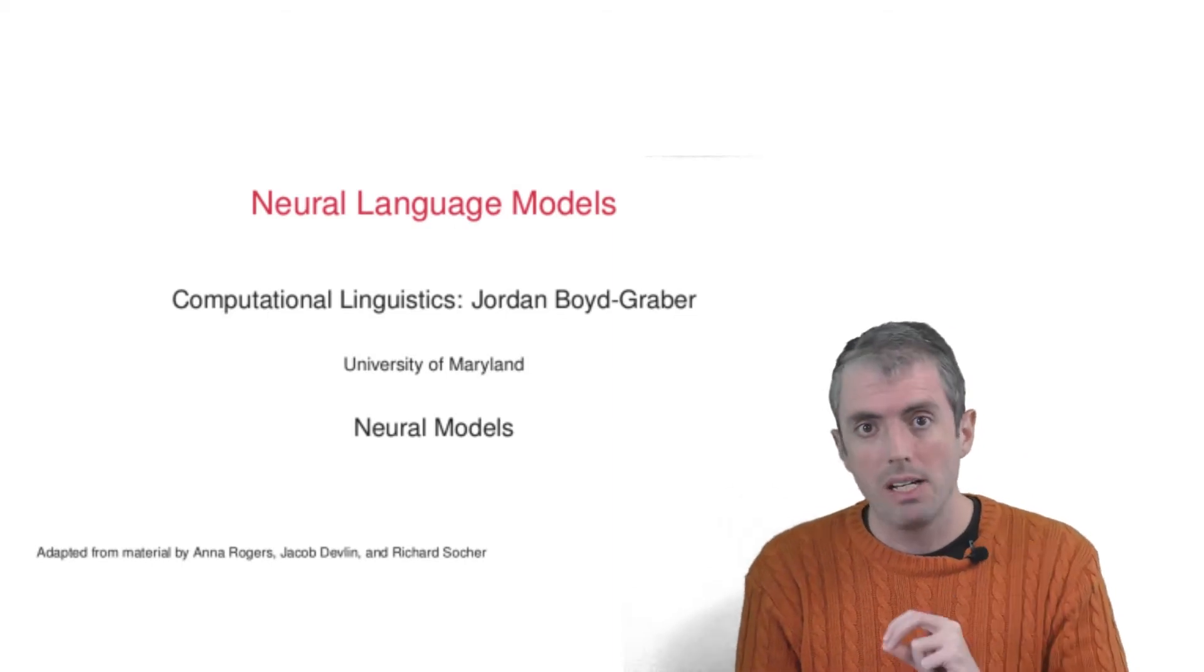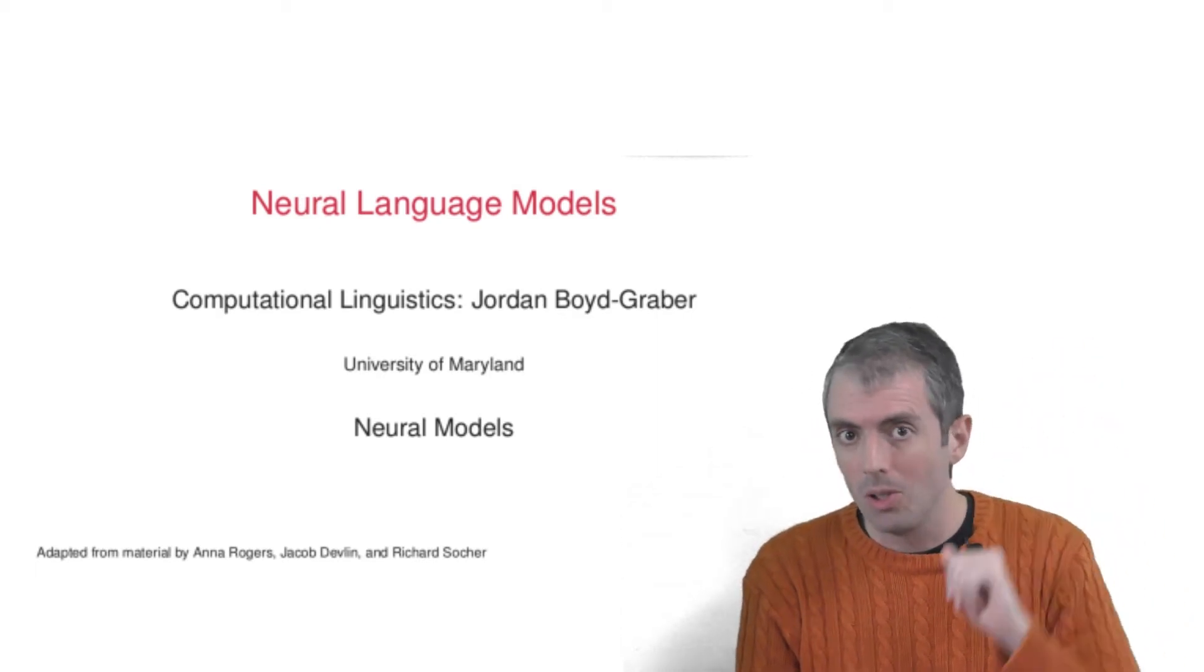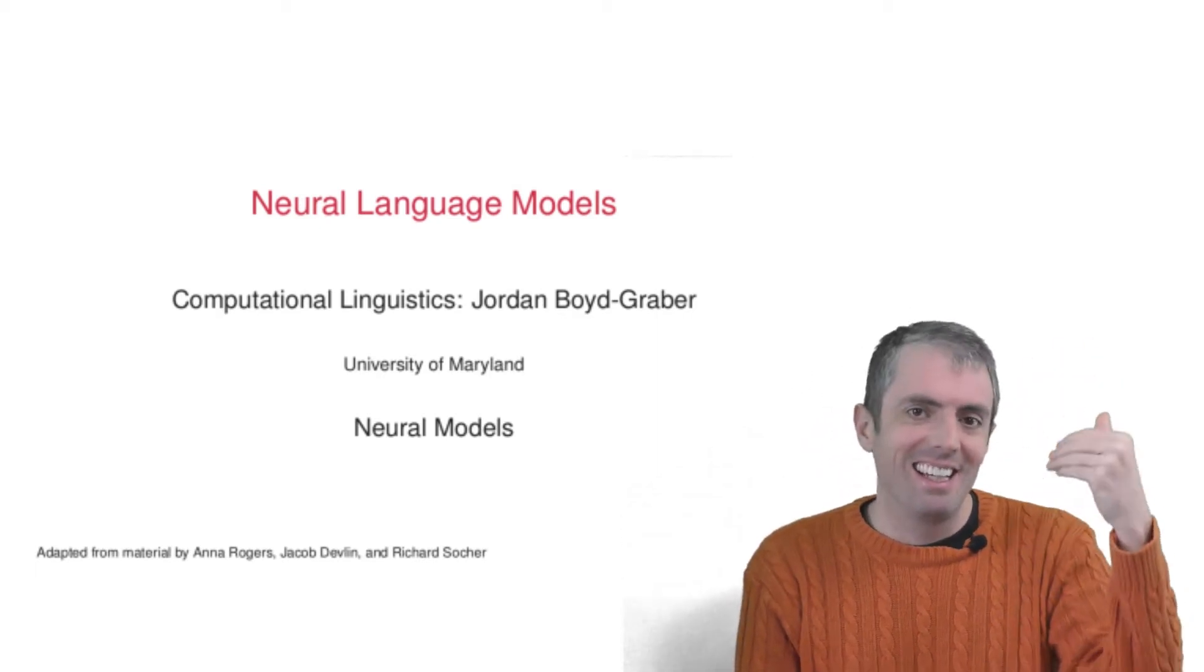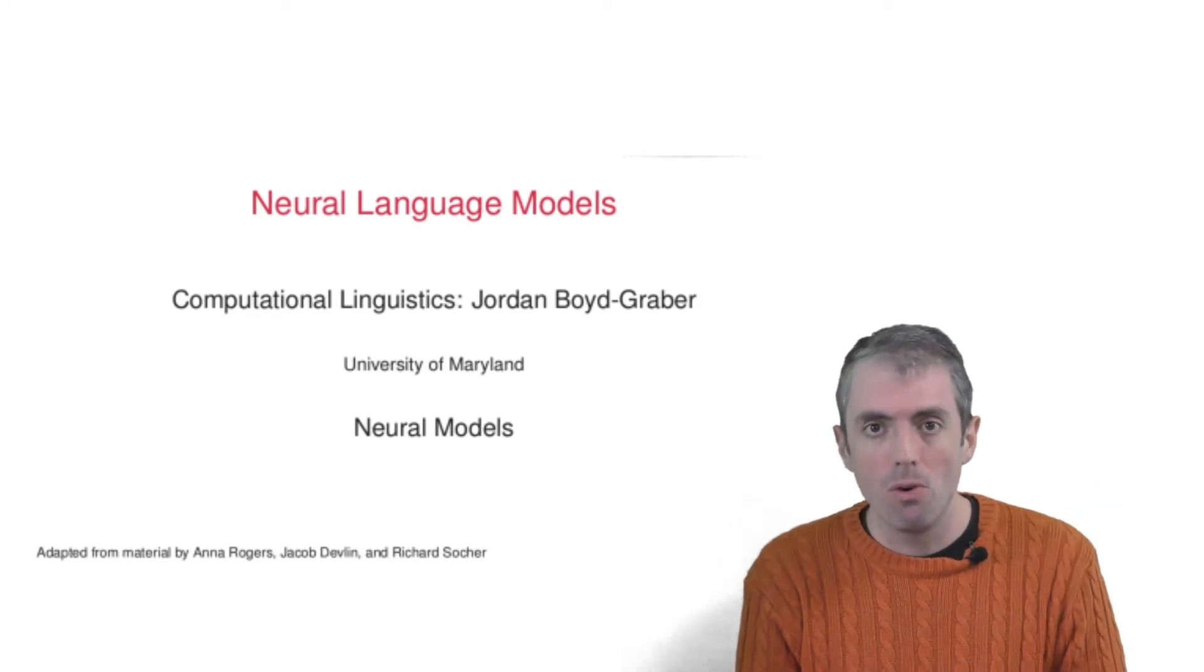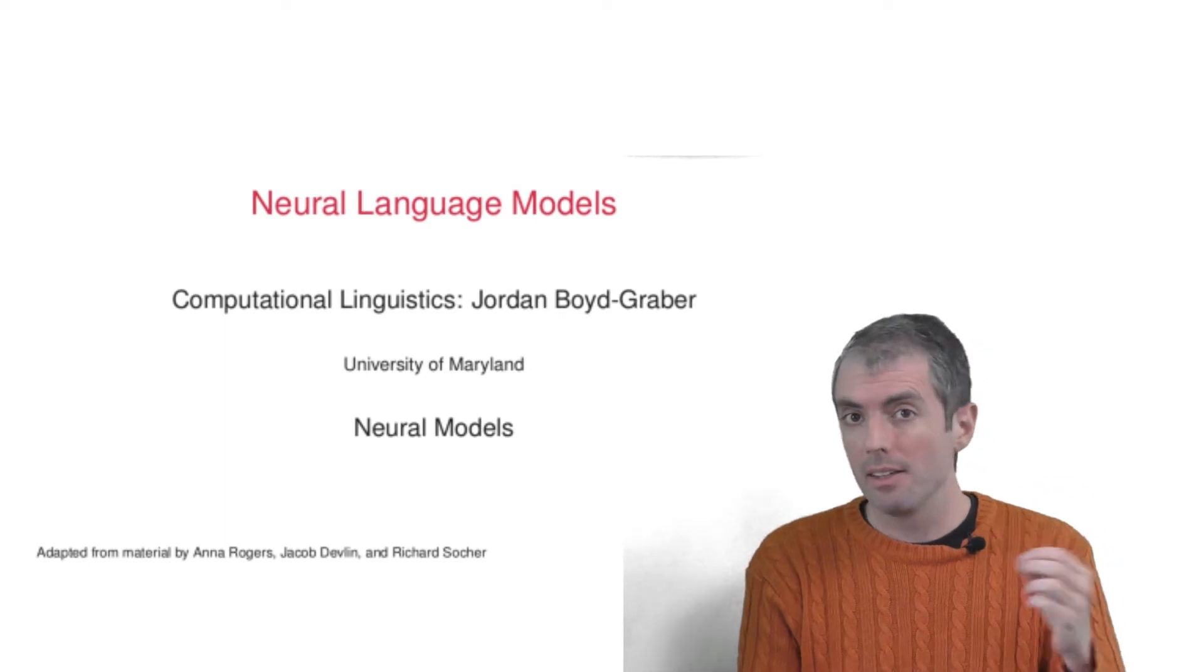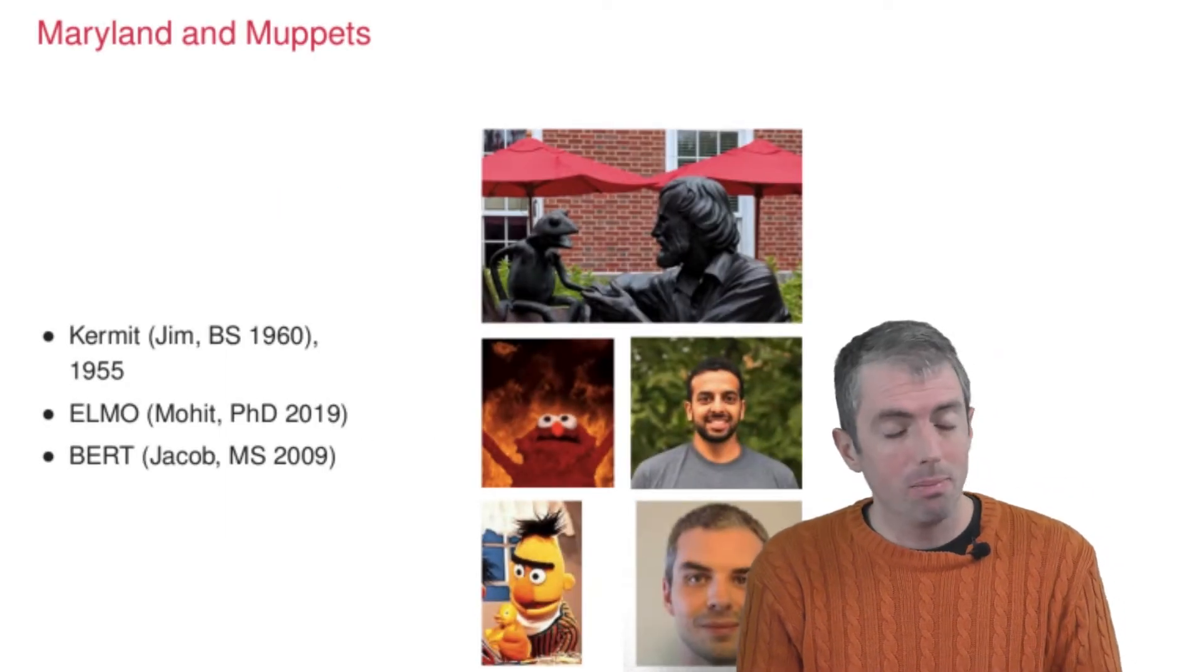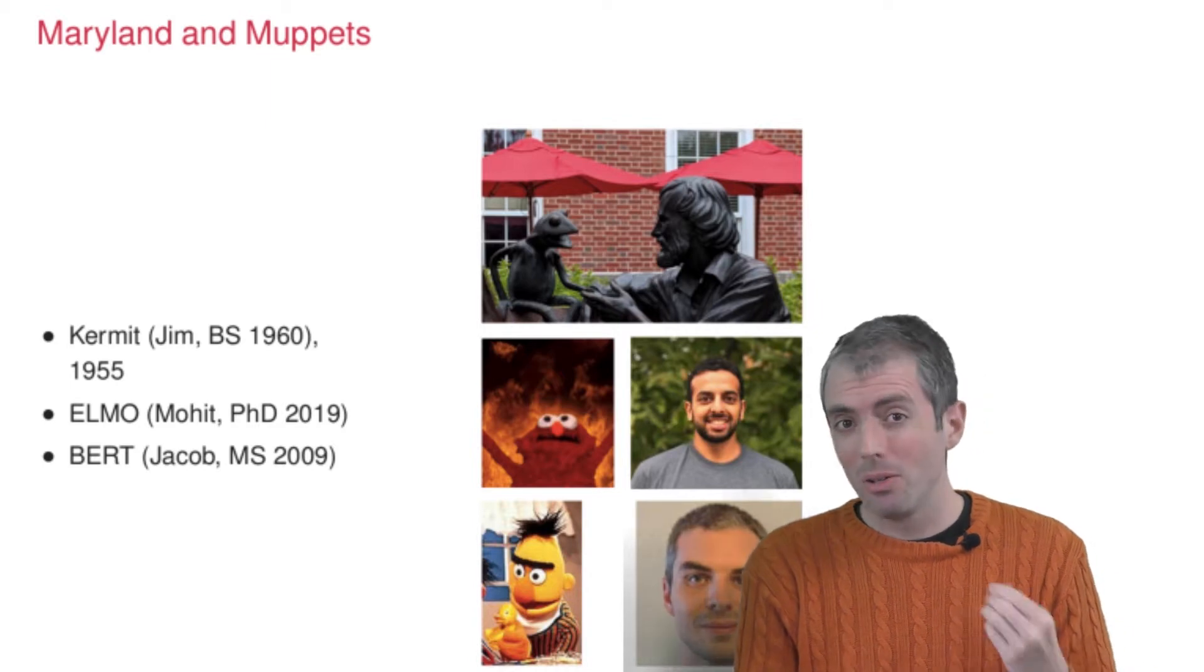Neural language models are particularly important not just because they work better than normal probabilistic language models that we've talked about before, but because they are important tools for doing other natural language processing tasks.